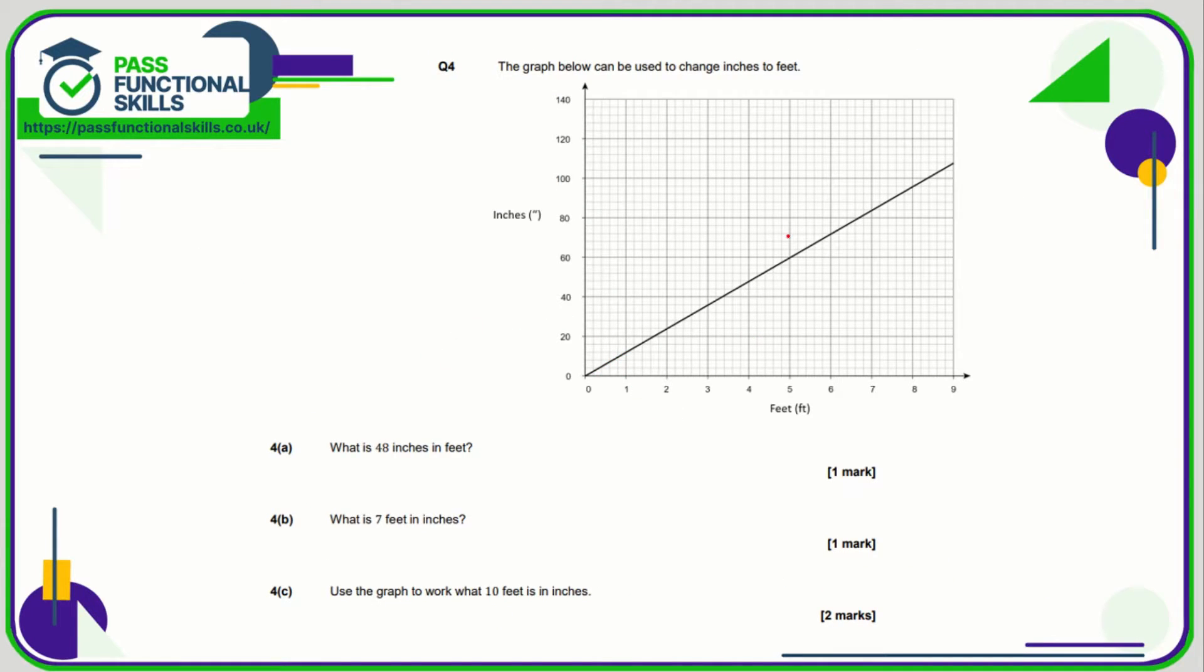Question number four, we're using this line graph to interpret. So we want to know what 48 inches is in feet. Let's find, first of all, inches is on the vertical axis. Let's find 48. Here's 40, there's 60. So 50 is in between, so it's hard to say exactly where 48 is going to be. Let's just take this line here as approximately 48. And luckily that corresponds with exactly four feet.